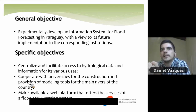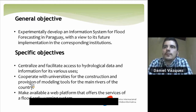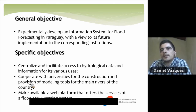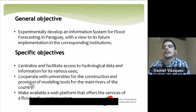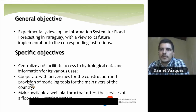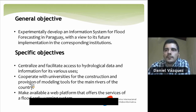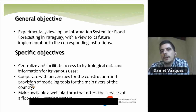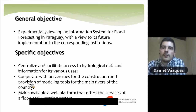To tackle these problems, we came up with this objective: to develop an information system for flow forecasting for the entire country, with a view for its future implementation in the corresponding institutions. The specific objectives were: first, to centralize and facilitate access to hydrological data and information; second, to cooperate with universities for the construction of modeling tools for the main rivers; and third, to make available a platform offering the services of a flood early warning system.